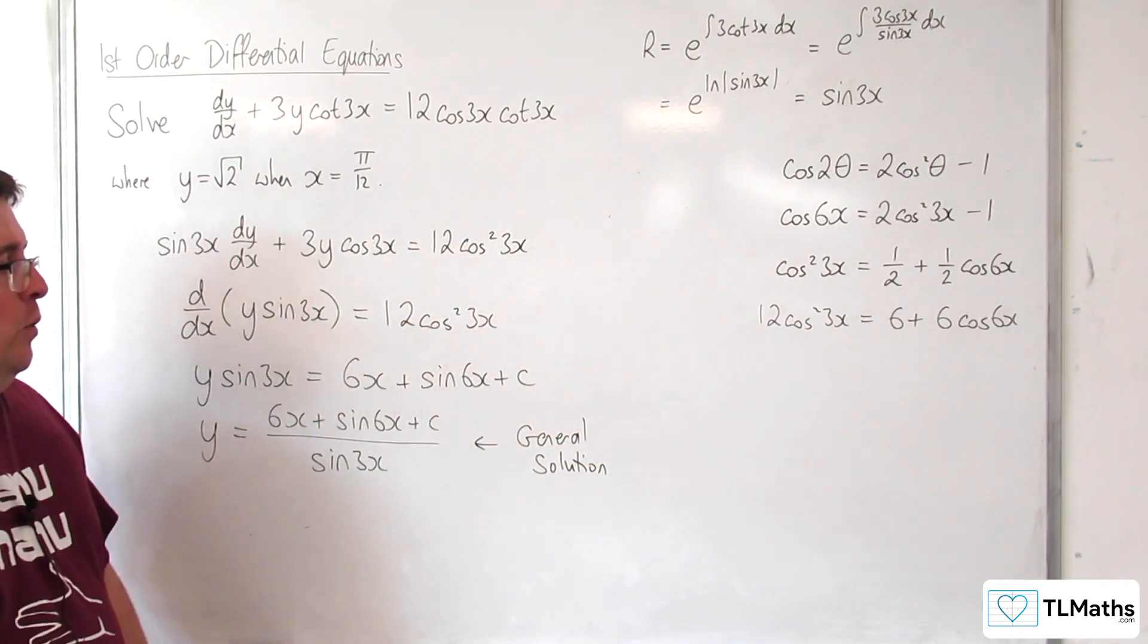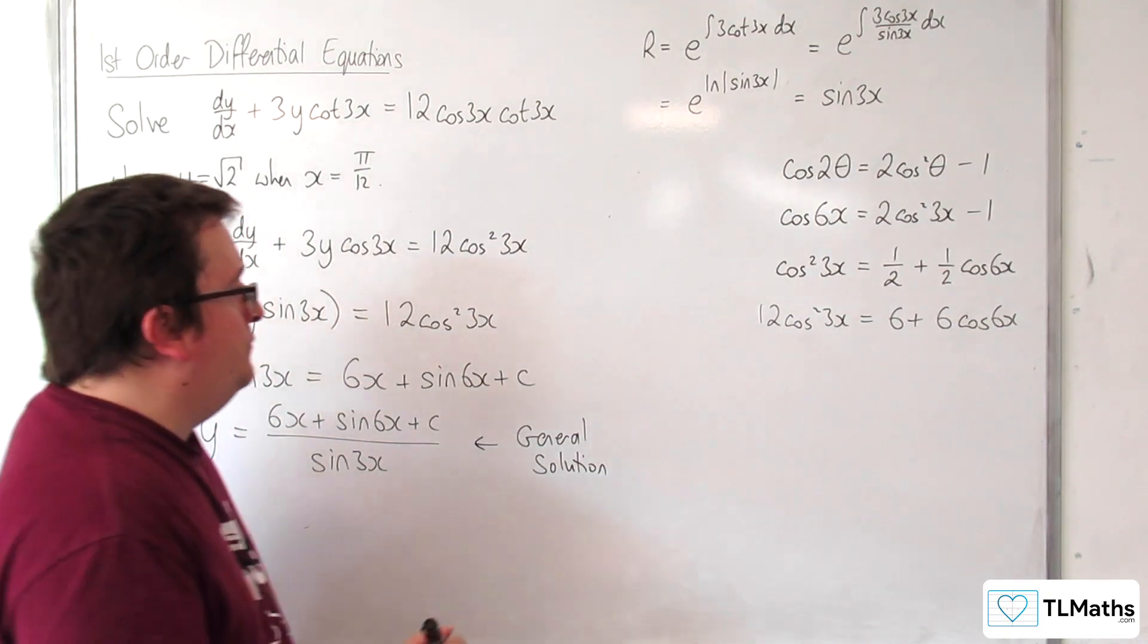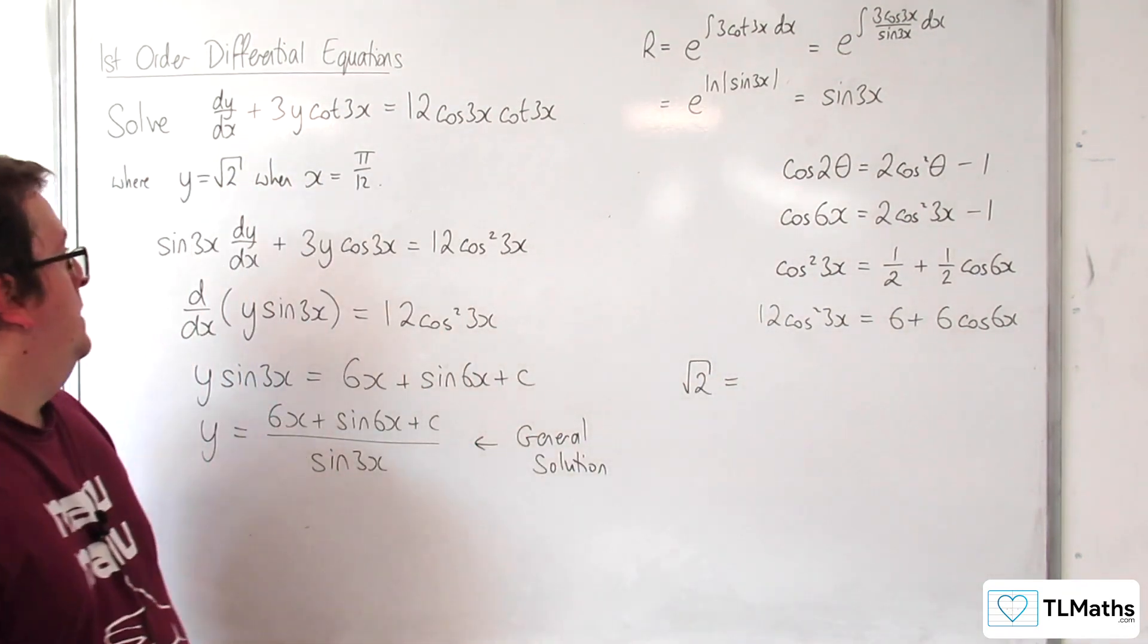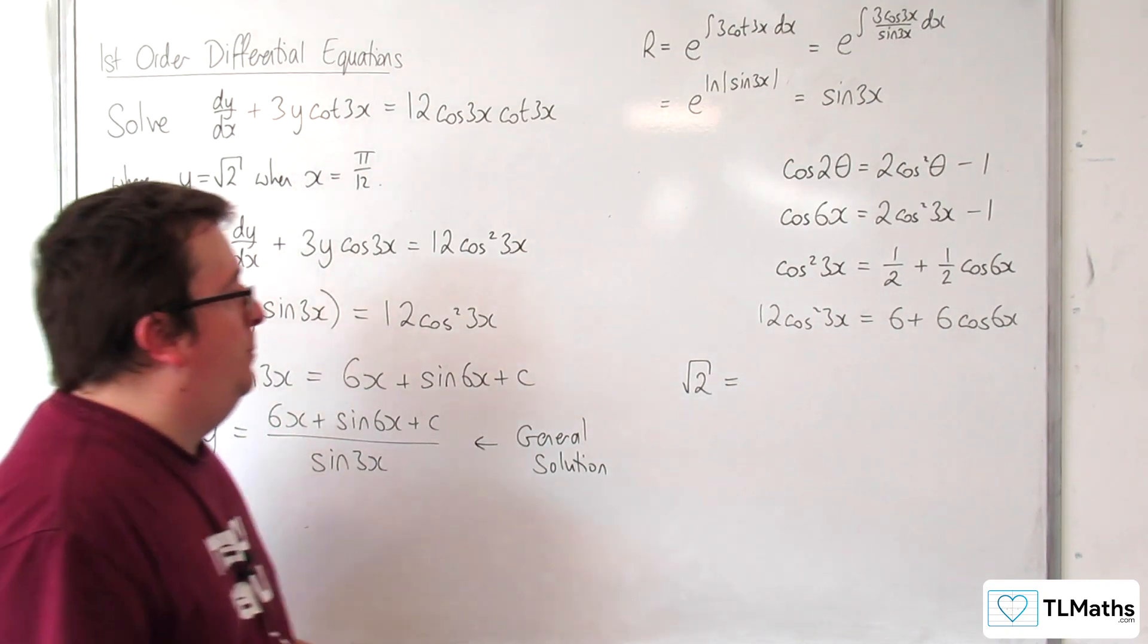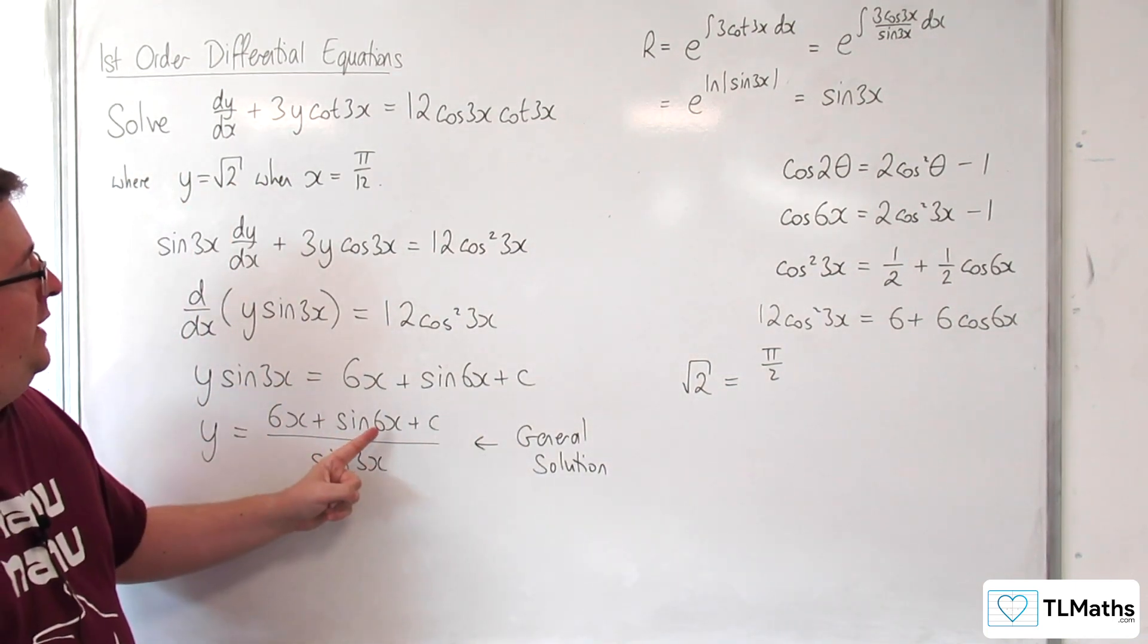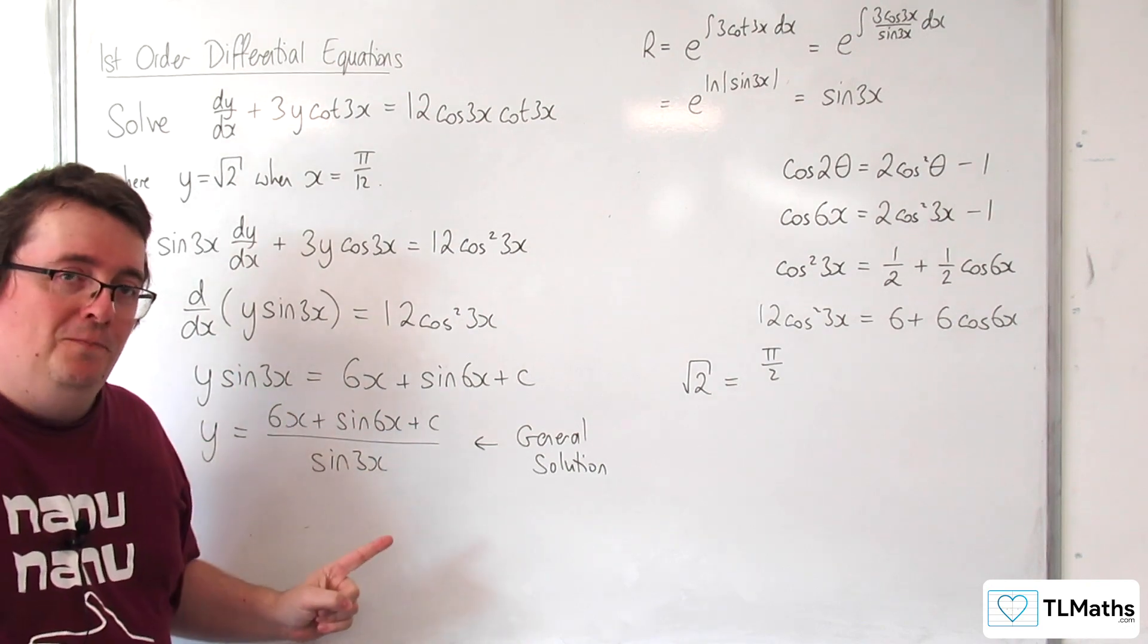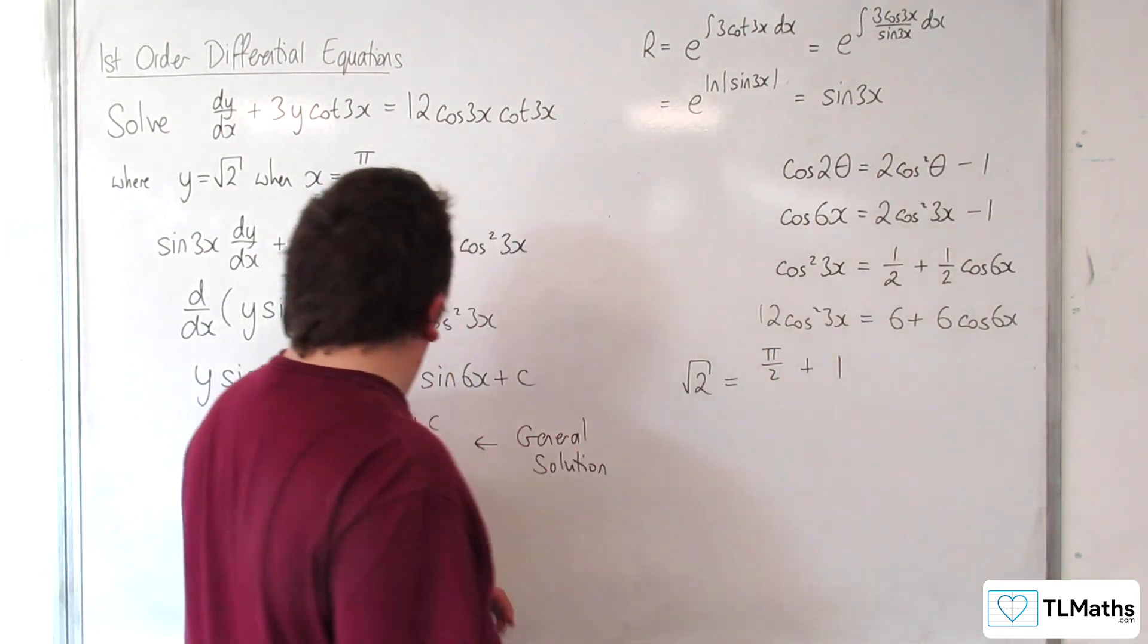We now want to find the particular solution using this information here. So y is equal to the square root of 2, x is equal to pi over 12. 6 lots of pi over 12 is pi over 2. Then we get plus sine of 6 pi over 12, so sine of pi over 2, which is 1, plus c.